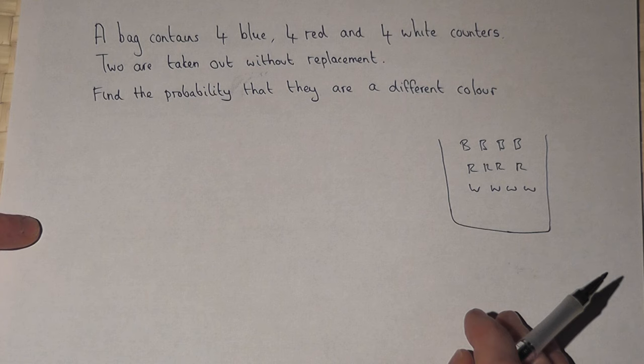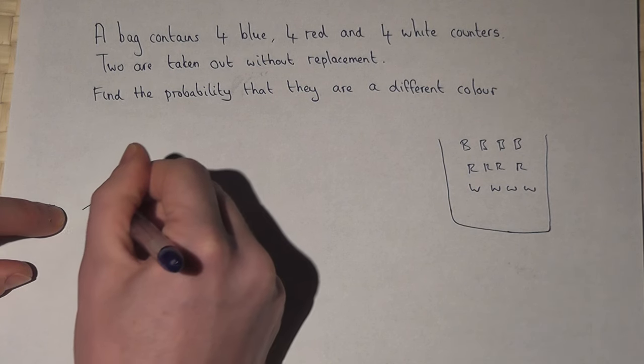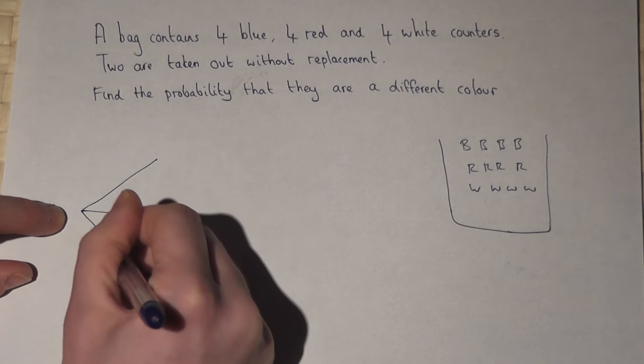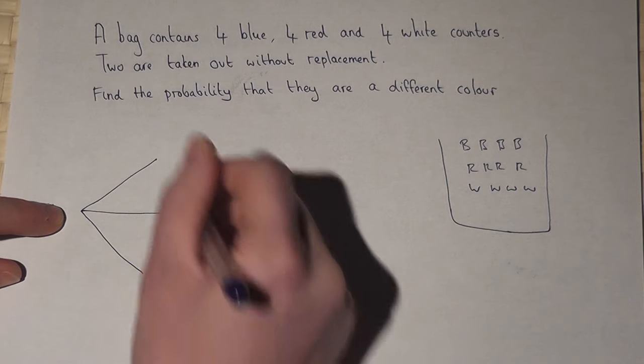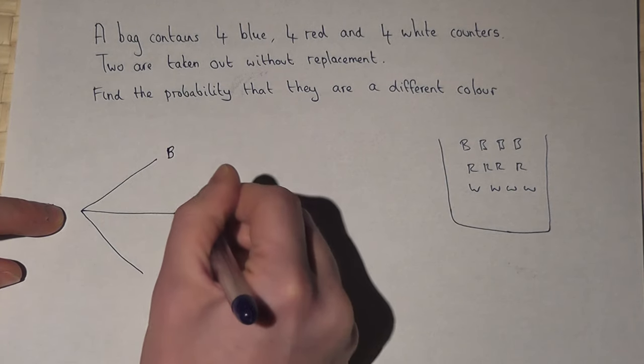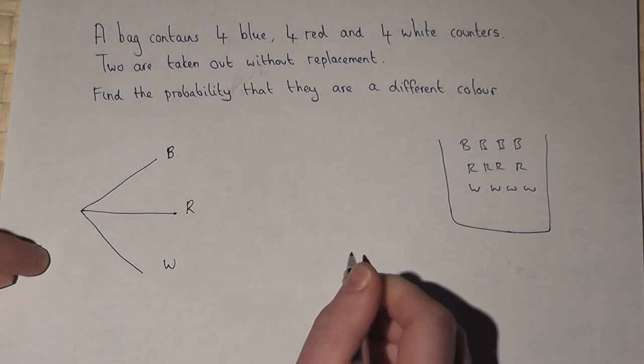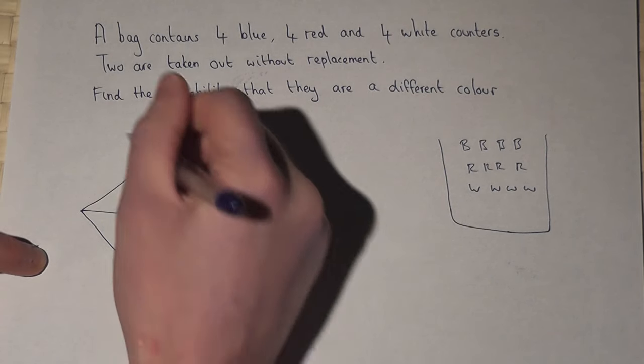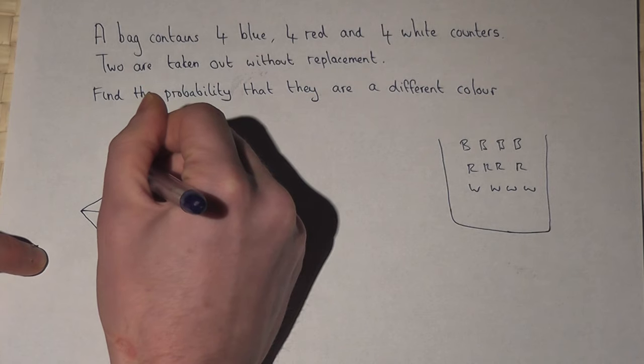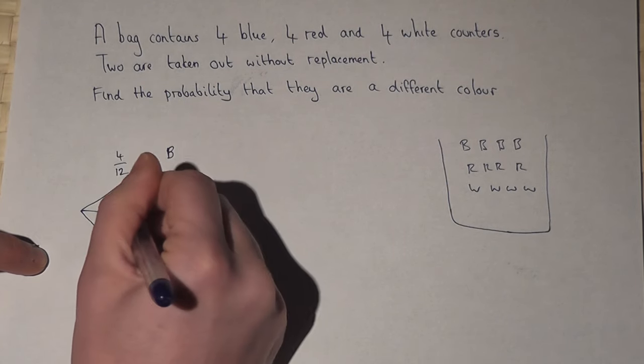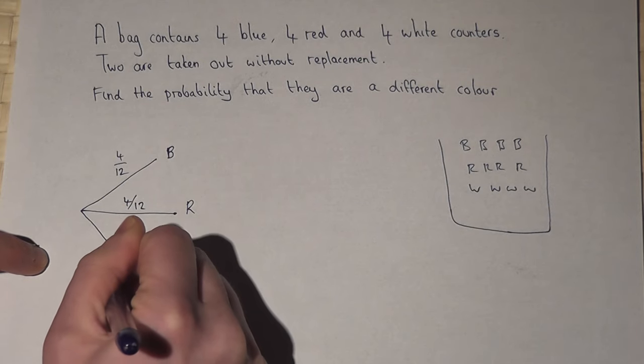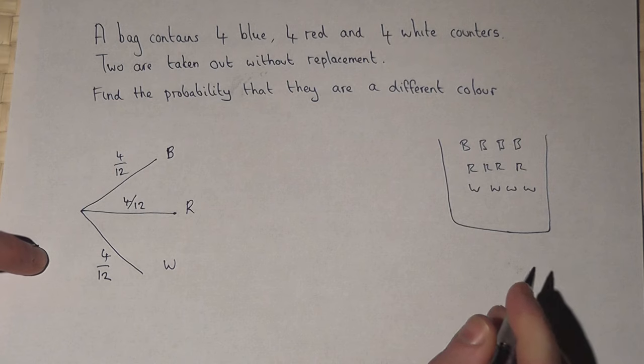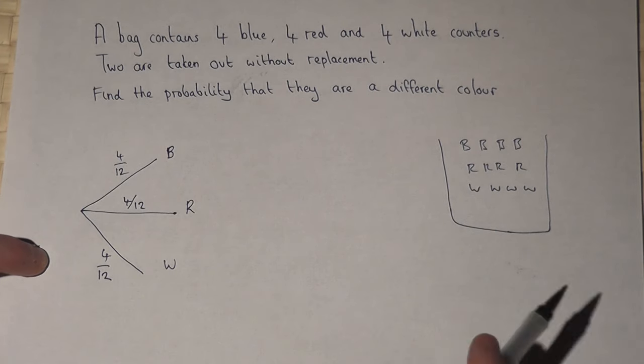Now to answer this we can draw a tree diagram and label the branches with the options. So when you first take the counter out it could be blue, red or white. The chance of a blue is four out of twelve or a third. The chance of red is four out of twelve or a third and white is also four out of twelve. Now then that's the first counter.